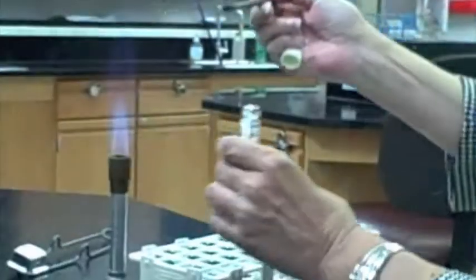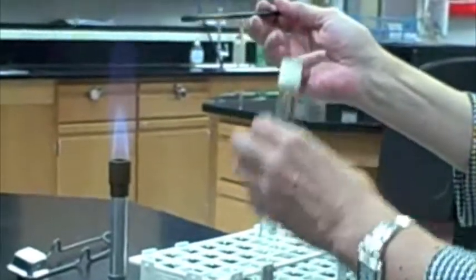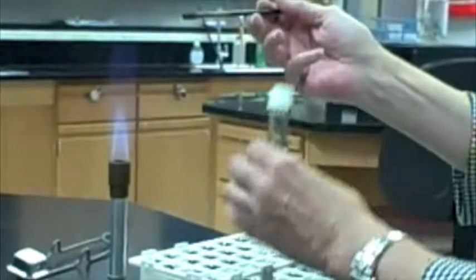Take care not to touch the sides of the tube. Keeping the loop in one hand, flame the top of the test tube and screw the cover back on. Set this tube in the test tube rack.